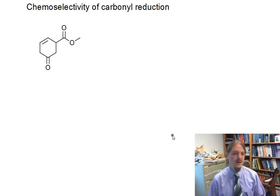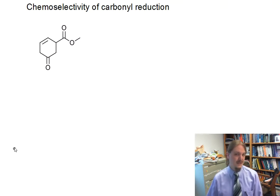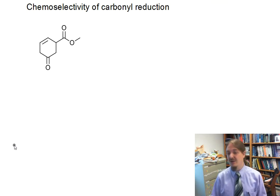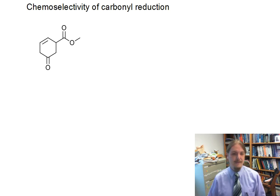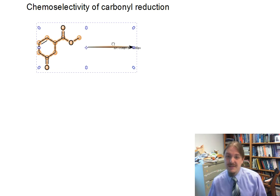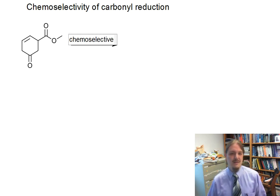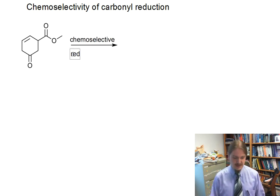Hello. In this video, I'm going to talk a little bit about the chemoselectivity of carbonyl reduction reactions. In this particular context, I'm going to use a molecule that has a couple of different functional groups — two carbonyl functional groups, a ketone and an ester — and I've thrown an alkene into the mix. The main reason is that the alkene is also a functional group that can be reduced. So let's talk about chemoselective reduction.